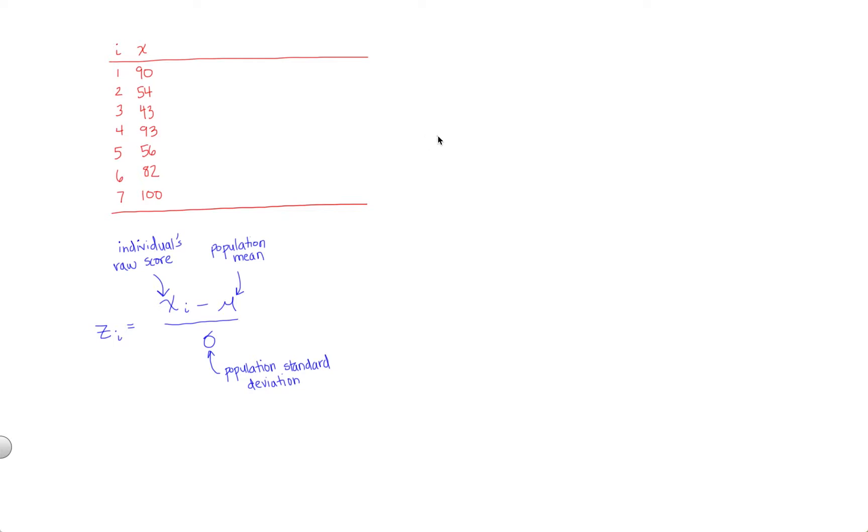In this video, we're going to learn how to calculate a z-score by hand. In the bottom left-hand corner of your screen, you can see the formula for a z-score. z sub i is on the left-hand side of this equation. The i in the subscript represents individual and maps onto your index number, representing the idea that we're referring to an individual.